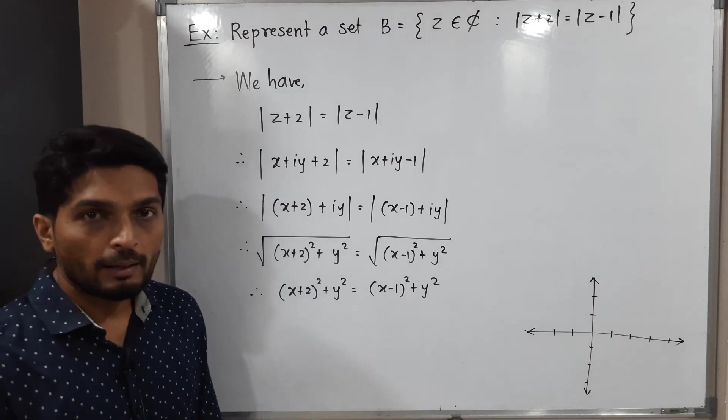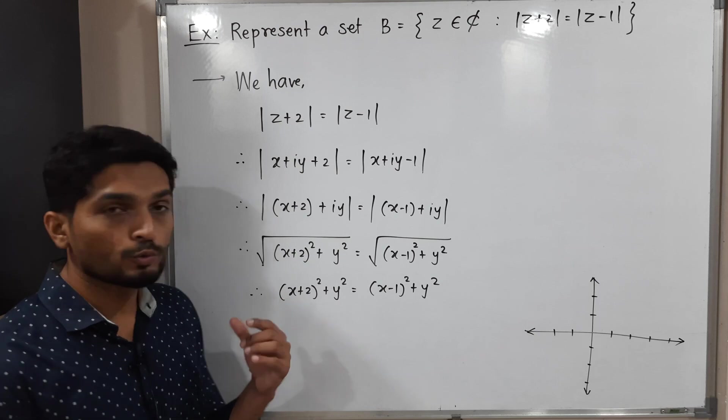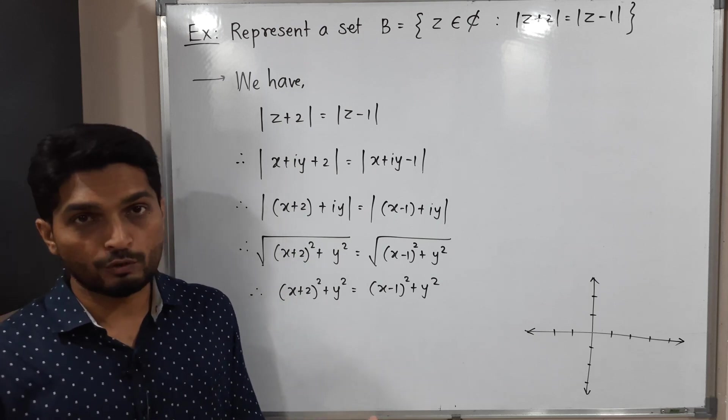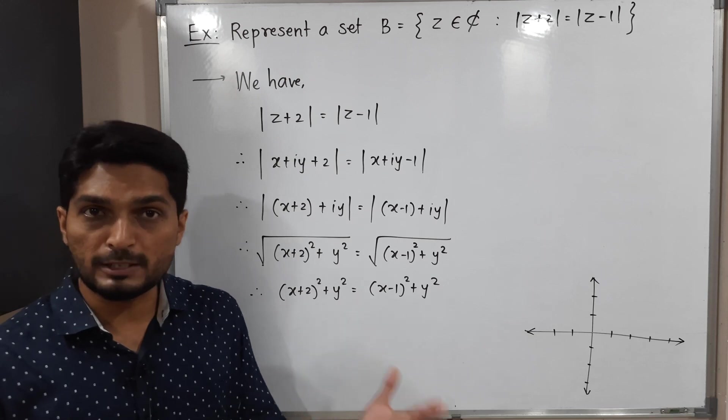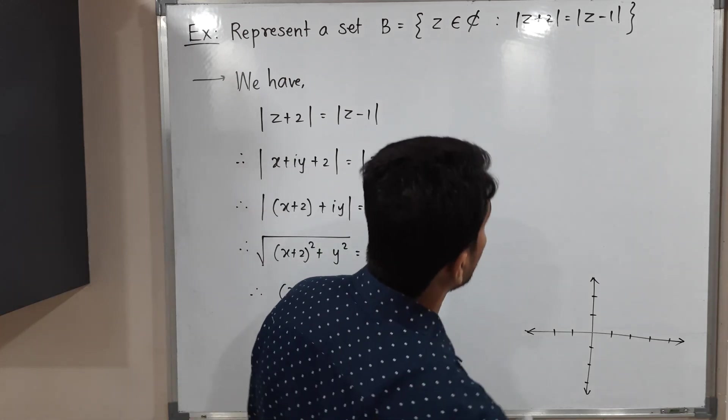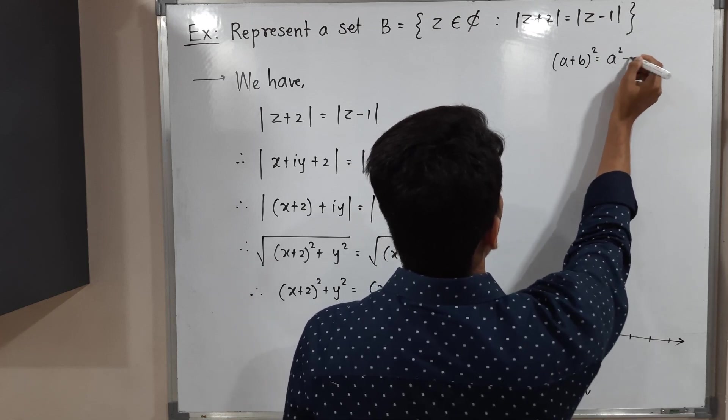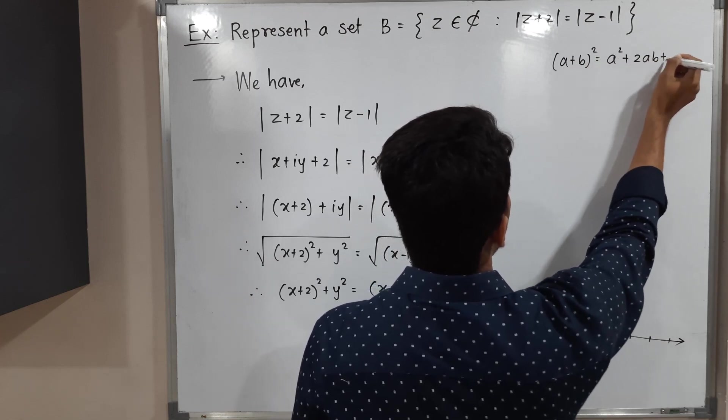See I am going to expand the bracket x plus 2 bracket square. We are familiar with the formula a plus b bracket square formula a square plus 2 a b plus b square. Let me mention the formula here: a plus b bracket square formula is a square plus 2 a b plus b square.